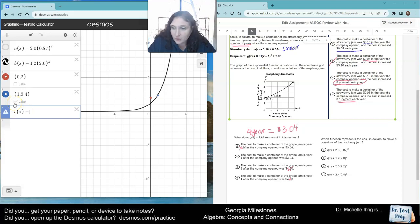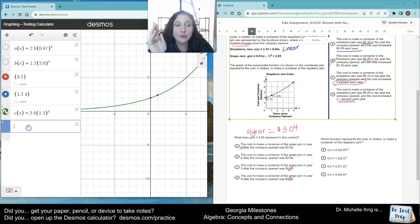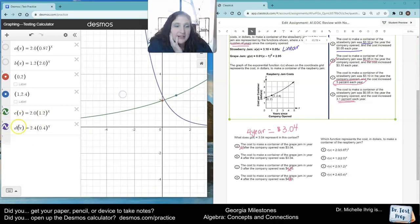Let's do letter C. 2.0 times 1.2 to the X. All right, well, if I turn off that, yes, the letter C goes through both points. So we know that C is the correct answer, but you know me. We're going to try letter D. So I'm going to do D of X equals 2.4 times 0.4 to the X. And we can see there that the purple one doesn't even touch either the red or the blue point, so it can't be that one. It's got to be letter C, which is the green graph.